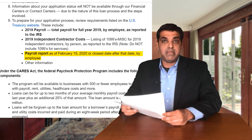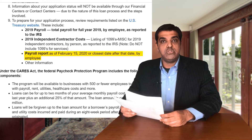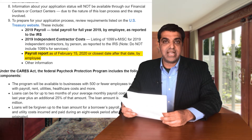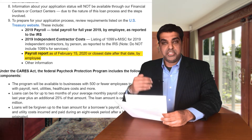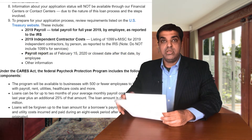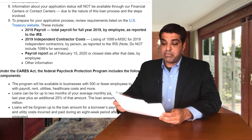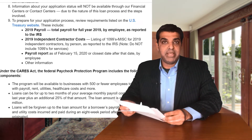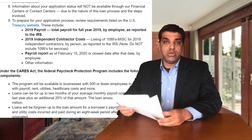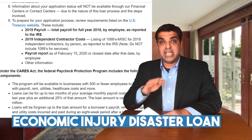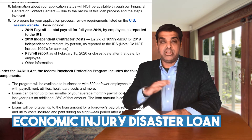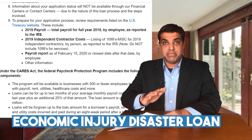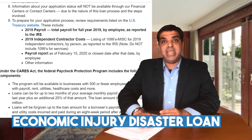They also want a payroll report as of February 15, 2020. Bank of America provides additional criteria under the CARES Act — the eligibility criteria for the Paycheck Protection Program — and they briefly address the Economic Injury Disaster Loan as well.